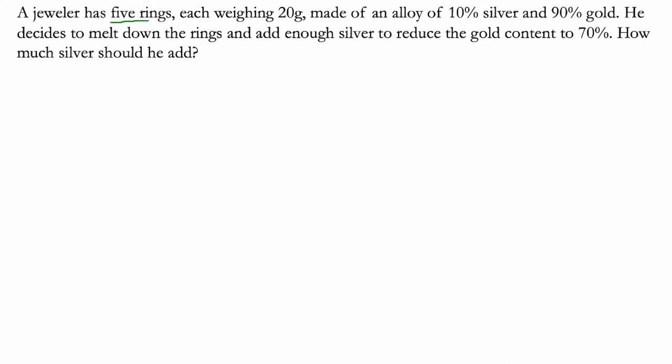So first of all, let's read it. A jeweler has five rings, each weighing 20 grams. So I'm thinking there's five rings, 20 grams each. They've got 100 grams of weight here, and it's made of an alloy, a mixture of silver and gold. 10% silver, 90% gold.